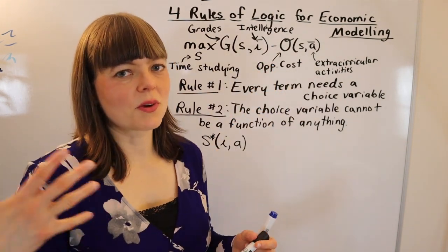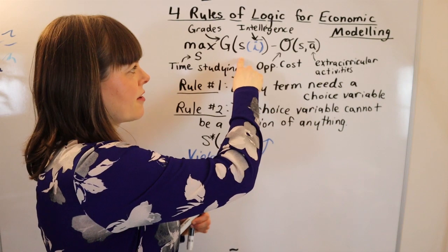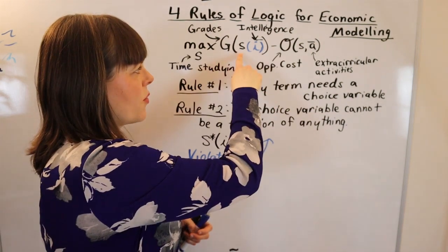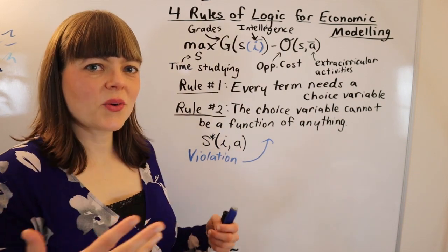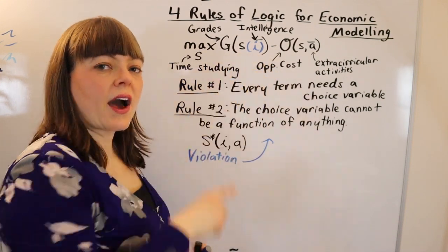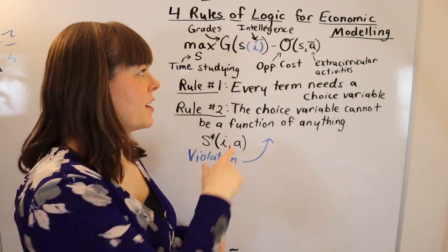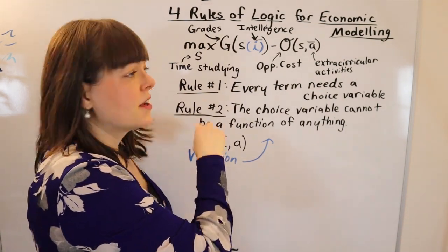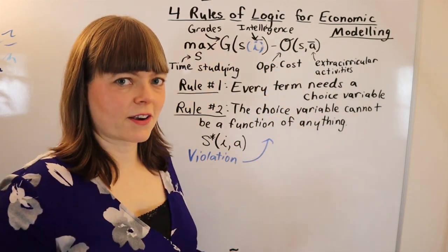Let me show you what a violation of that would look like. Oftentimes when people are building a model, they'll say that time spent studying is a function of intelligence, so they'll stick it into the model like this. This of course violates our rule. When you have this intuition that the choice variable is a function of something, how you fix that is you make sure this other thing is going to be an exogenous variable somewhere in the model. If you do that, then this will end up popping out of the model as part of the solution.